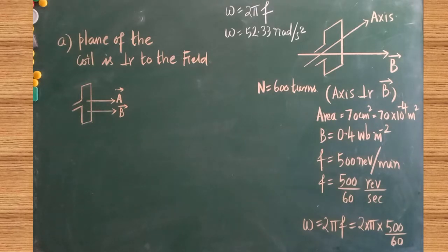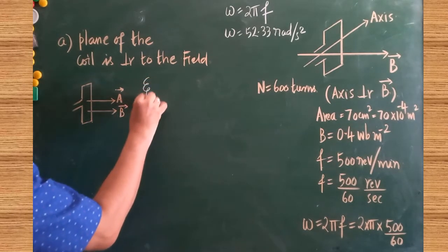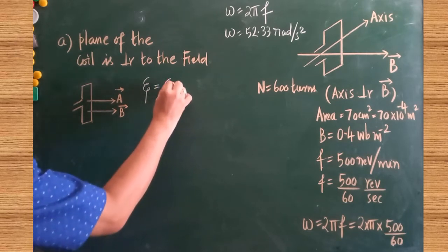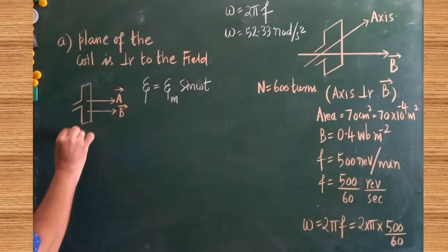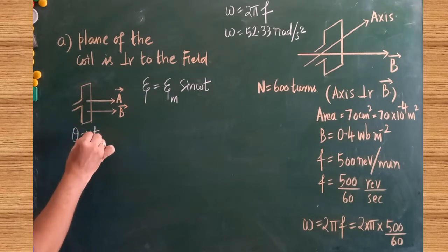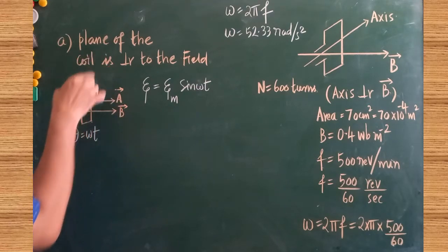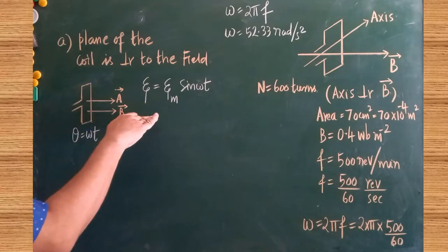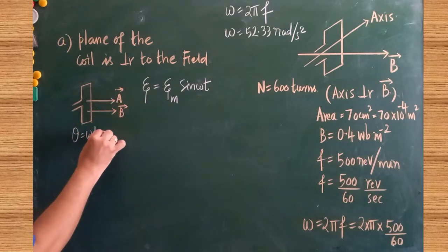In the first case, we are asked to calculate the instantaneous EMF when the plane of the coil is perpendicular to the field. The required formula is: induced EMF ξ = ξ_m sin(ωt), where ωt is the angle theta between the area vector A and the magnetic field vector B. When the plane of the coil is perpendicular to the magnetic field, the area vector and B vector are parallel, so the angle between them is zero degrees.